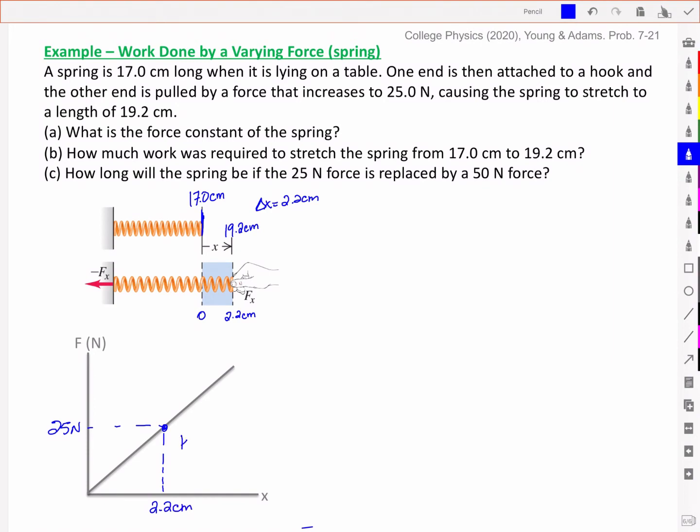And K, our spring constant, is the slope of this curve, or this line. So for part A, when we are asked to find the force constant, we just want to find that K. That means we are finding the slope where we went 25 newtons for a position of 0.022 m. And therefore I have a spring constant of 1.14 times 10 to the 3 newtons per meter.